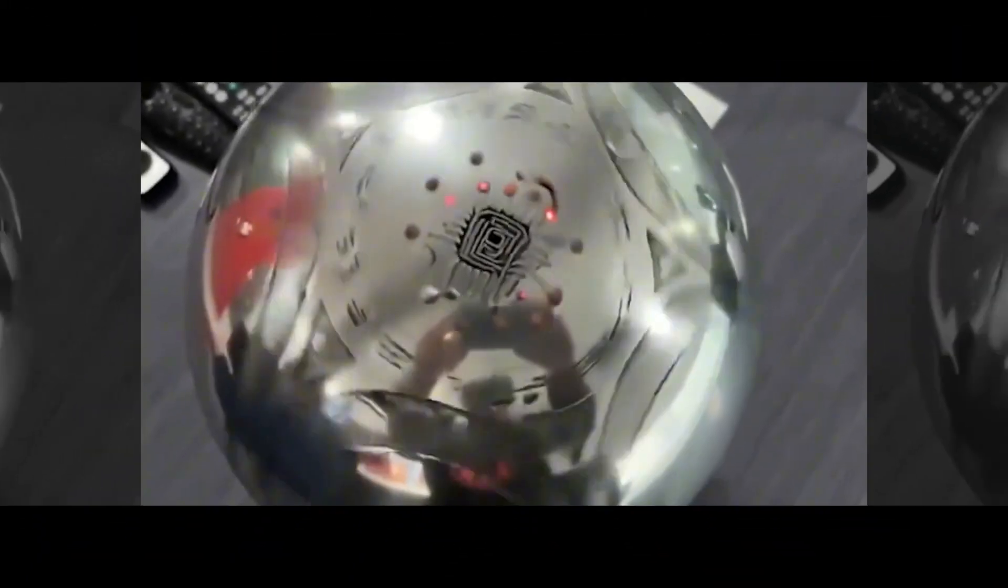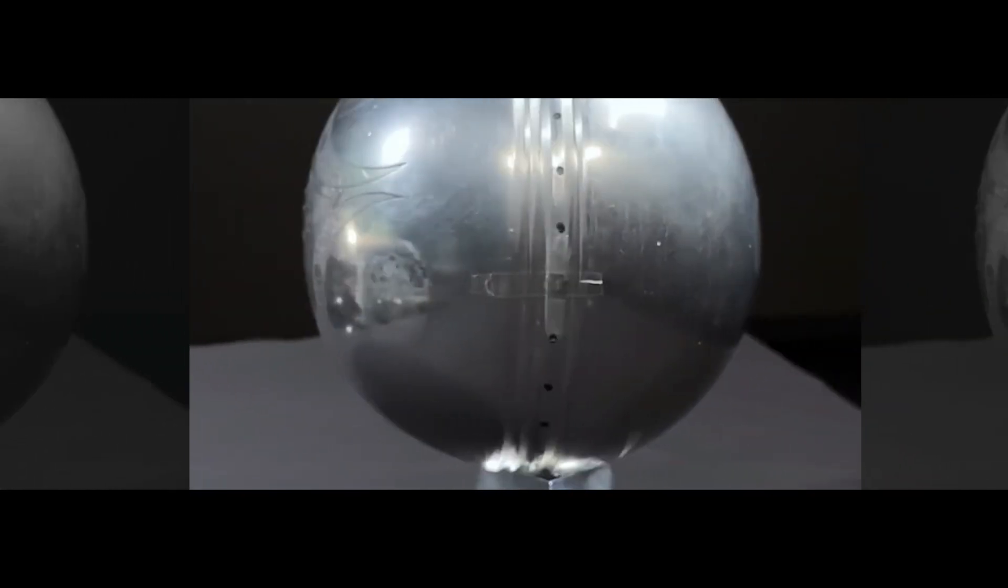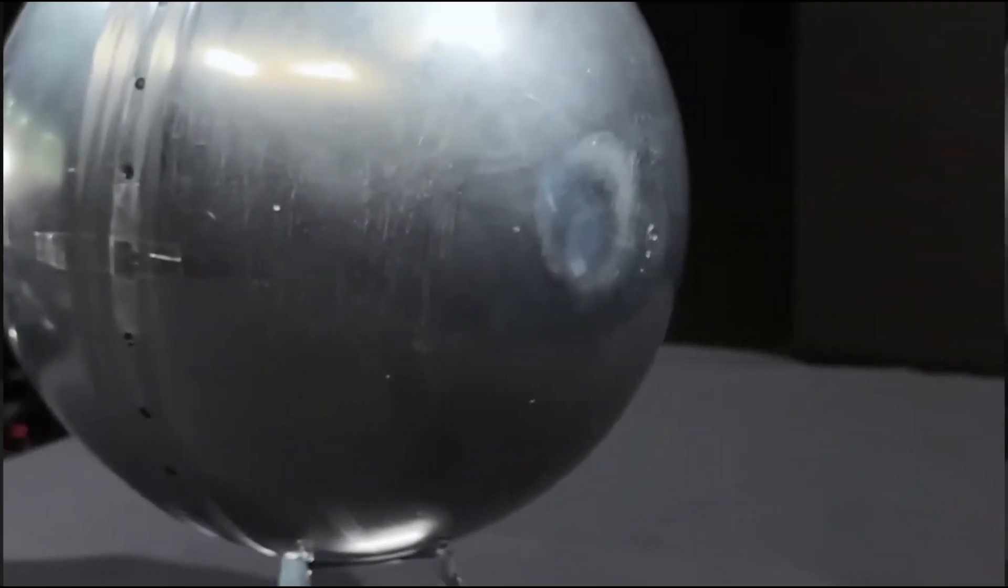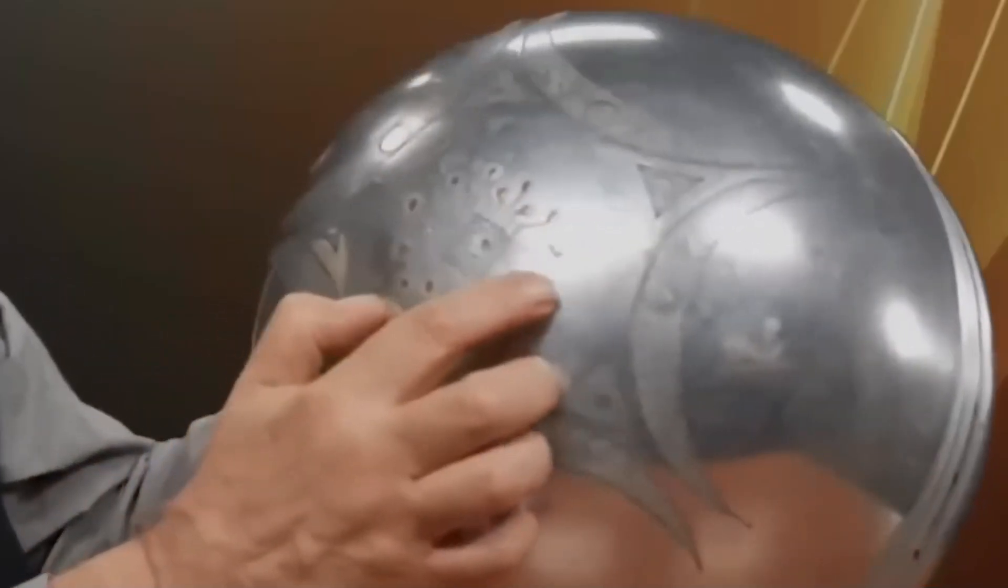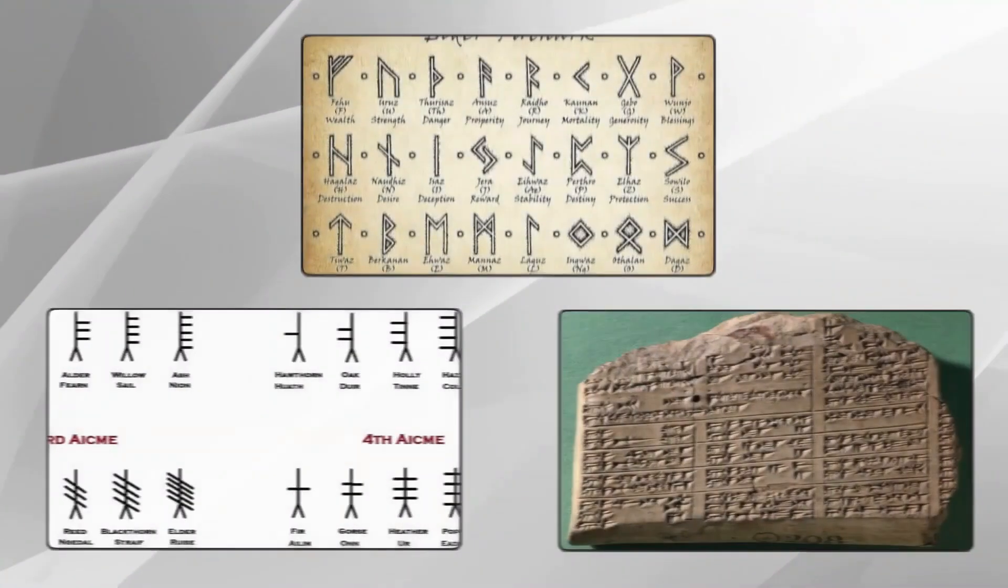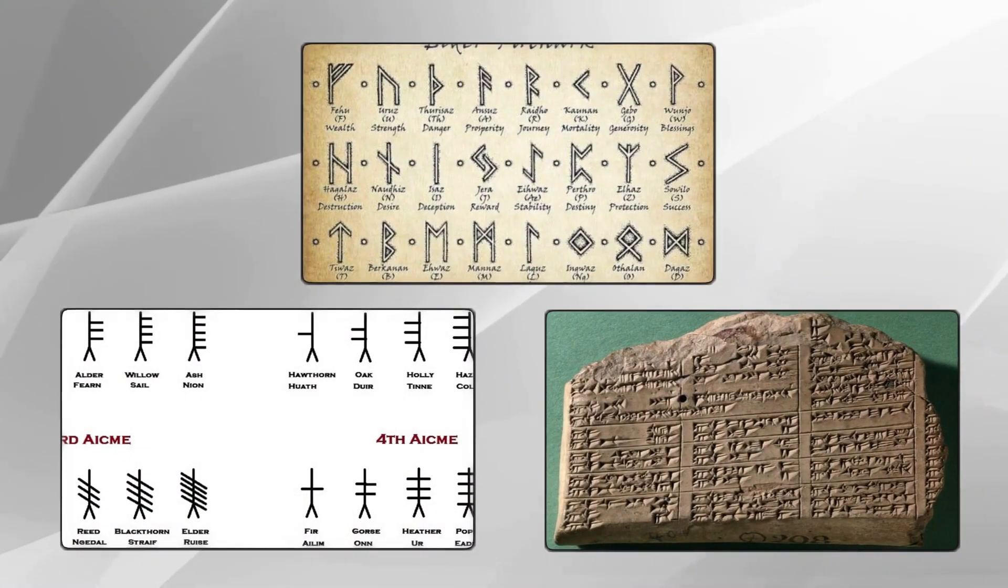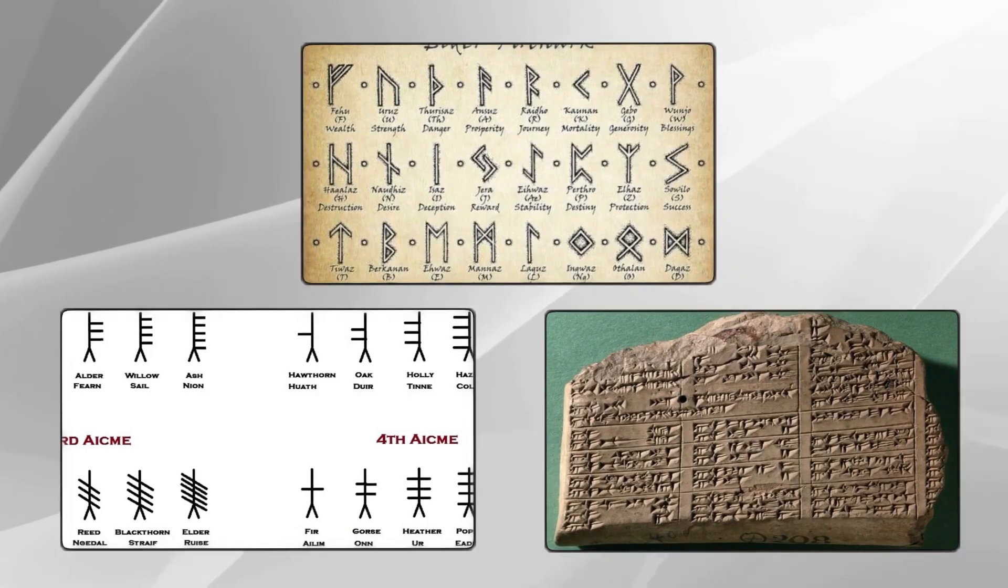Instead, perfection. A seamless orb. No welds, no joints. Just smooth, impossible metal. And etched across its skin, symbols that make linguists step back. Not hieroglyphs, not cuneiform, not anything on record.